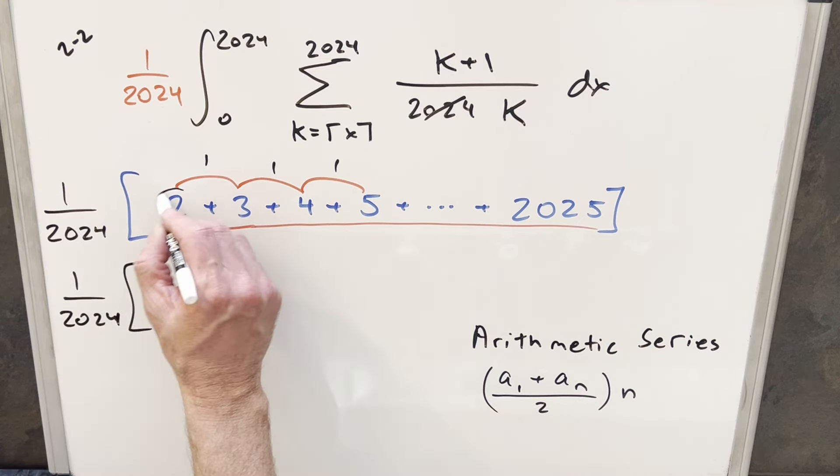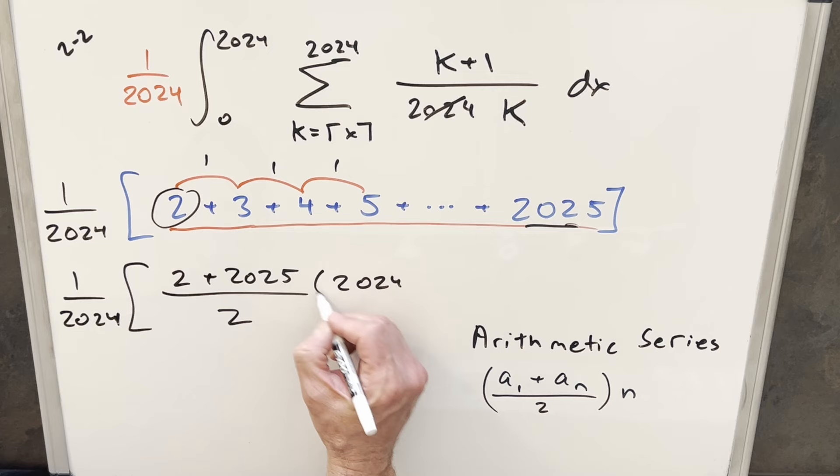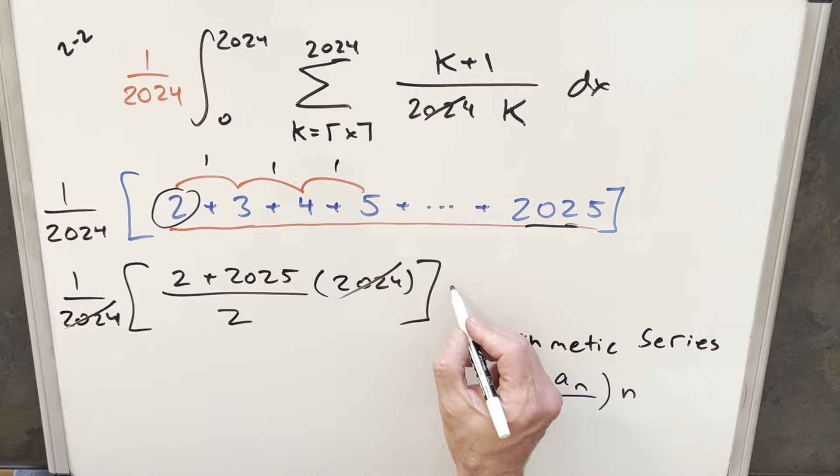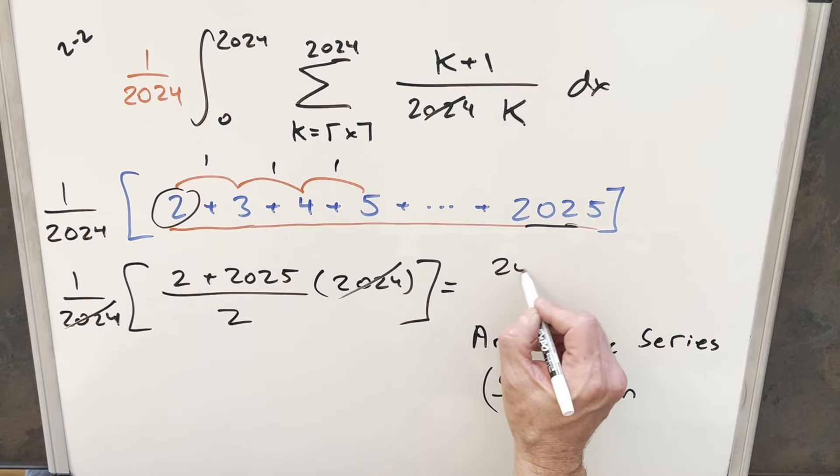And this is all going to be over two. And our n value is just going to be the number of terms, that's going to be 2025 minus one, we don't have the one there. So this is actually going to be 2024 over here. But then I can just cancel 2024 with 2024 here, adding up our numerator, we get our final solution of just 2027 over two.